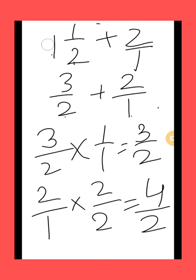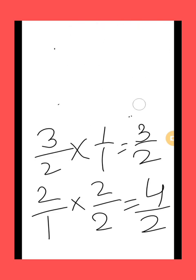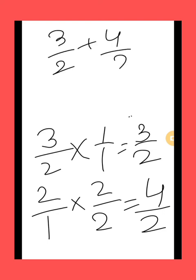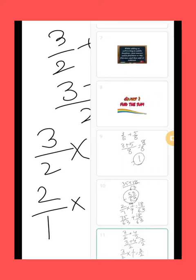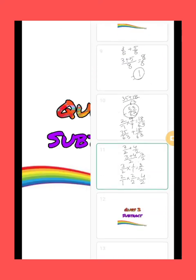Now we will add both fractions: 3 by 2 plus 4 by 2. First of all add the numerators and keep the denominator same. 3 plus 4 is 7 by 2.